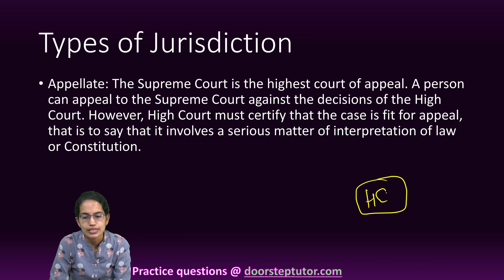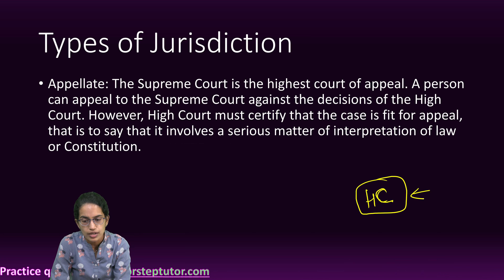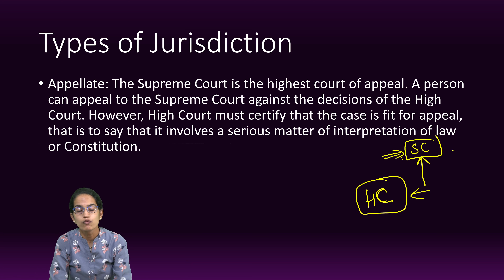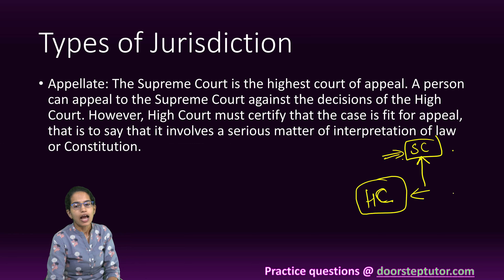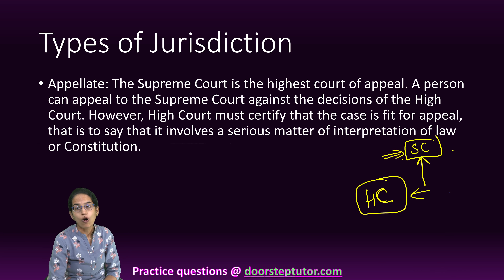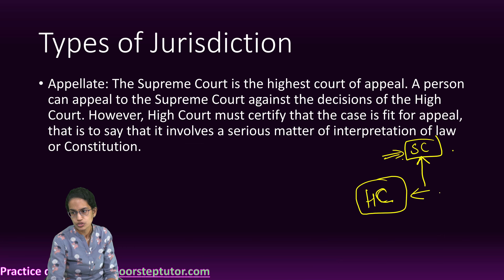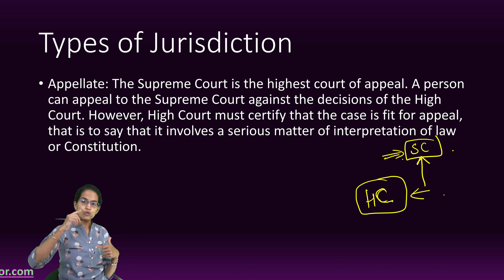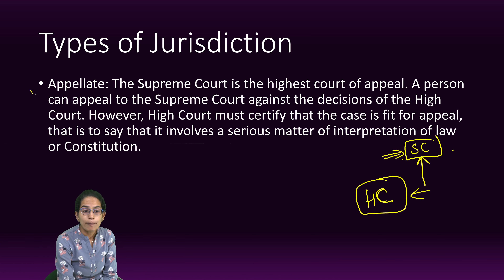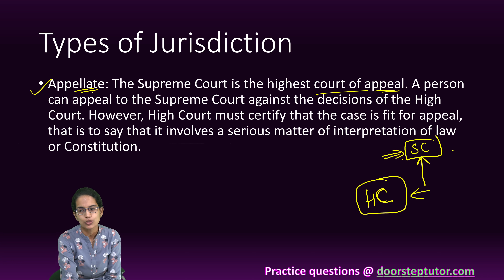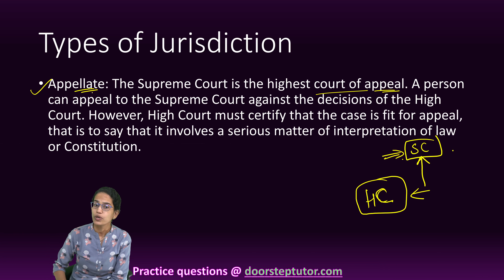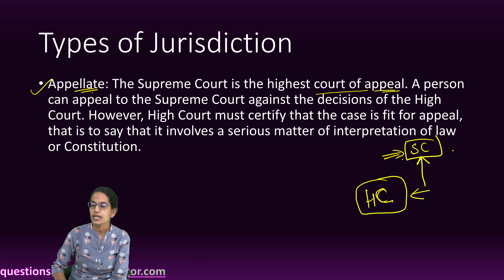The next is appellate jurisdiction. Appellate means appeal, so the Supreme Court is the highest court of appeal. Even if a person feels that a decision taken in the High Court was not satisfactory, the person can take that decision from the High Court to the Supreme Court. The High Court must certify that the case is fit for appeal and that it involves a matter of serious interpretation of law or the Constitution. In that case, the case is referred to the Supreme Court, and therefore it is called the highest court of appeal, or appellate jurisdiction.